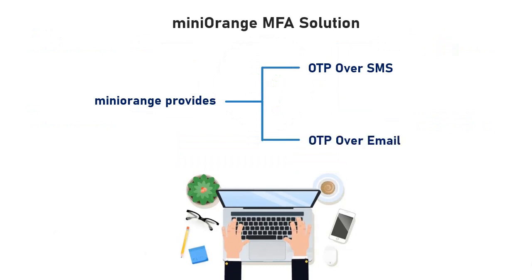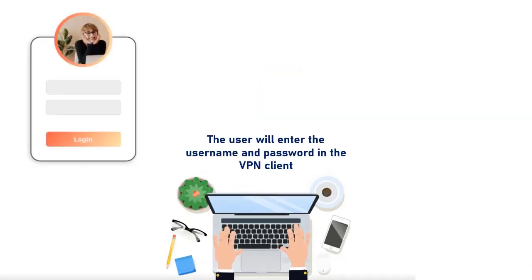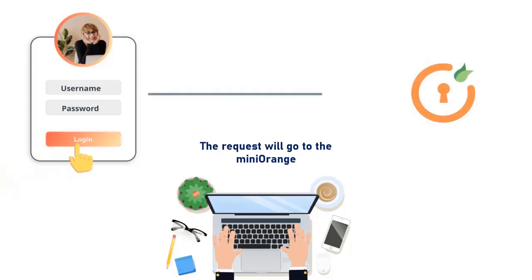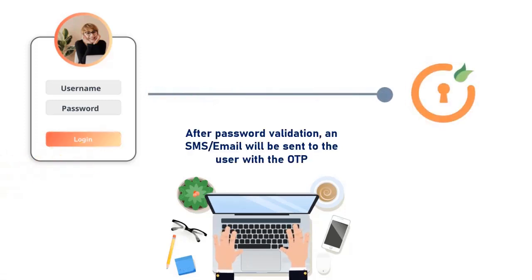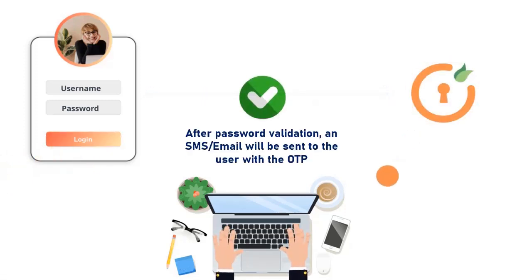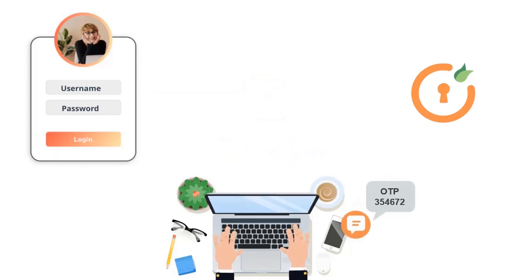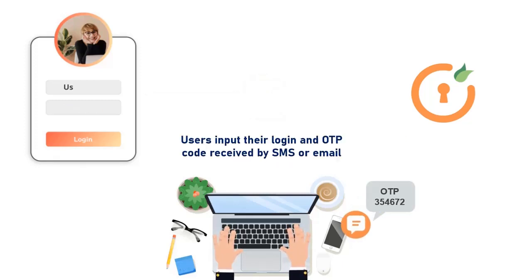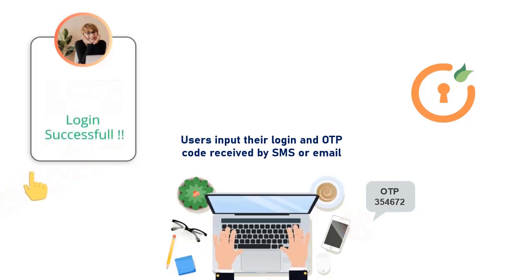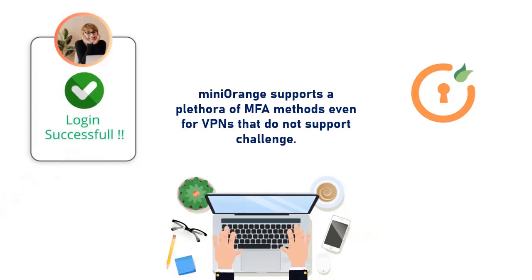Methods like OTP over SMS and email are also supported. For this, the user will be authenticated in two steps. The user will enter the username and password in the VPN client. The request will go to Mini Orange, and after password validation, an SMS or email will be sent to the user with the OTP. The user must then input their login and the OTP code received by SMS or email. In this way, Mini Orange supports a plethora of MFA methods, even for VPNs that do not support challenge.